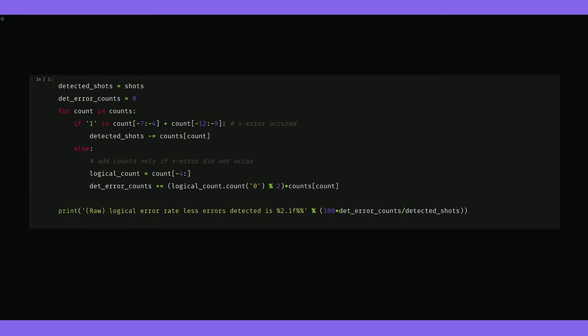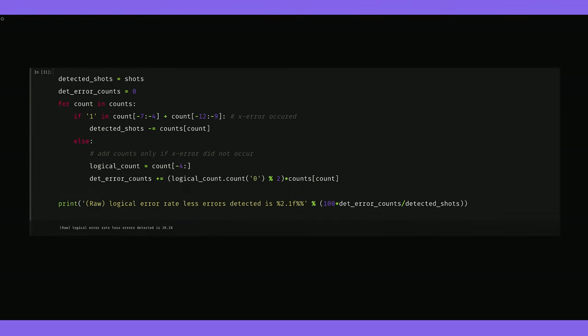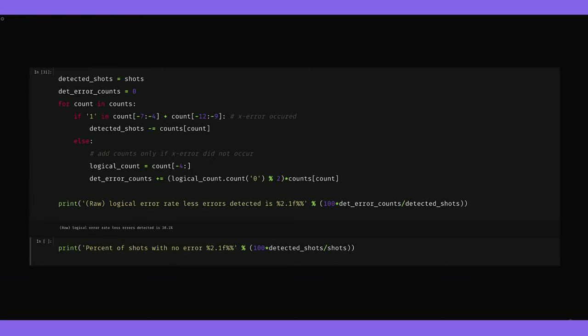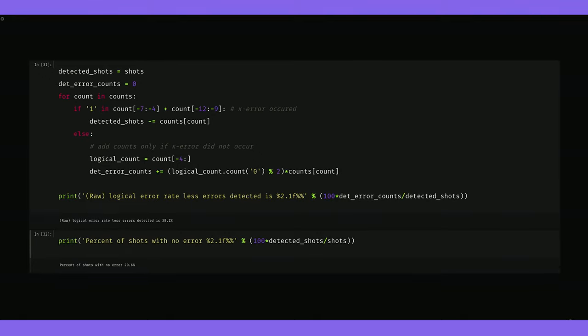How about if we throw away results whenever we detect a bit flip error? In this case, we improve our logical error rate to 38.1 percent, slightly better. Also note that we're only using 20 percent of our shots. This shows the value in being able to also correct the errors that we detect.